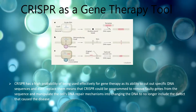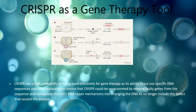CRISPR has a high probability of being used effectively for gene therapy, as its ability to cut out specific DNA sequences and even replace them means that CRISPR could be programmed to remove faulty genes from the sequence and manipulate the DNA. CRISPR can manipulate the cell's DNA repair mechanism into changing the DNA to no longer include the defect that caused the disease. This was shown in 2012 by two research papers, which demonstrated that the Cas9 could be controlled to cut a specific piece of DNA by editing the nucleotide sequence of crRNA to match the part of DNA you wanted removed.